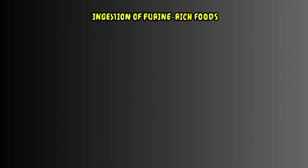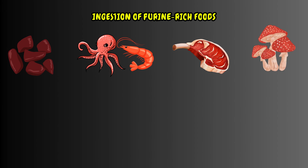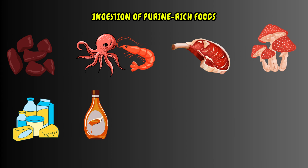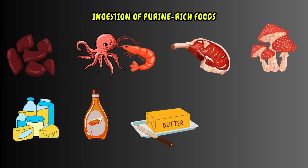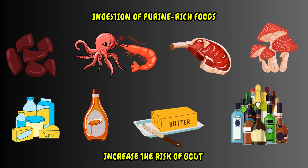Ingestion of purine-rich foods such as organ meats, seafood, beef, mushrooms, dairy products, fructose-containing drinks, high saturated fat, and alcohol increase the risk of gout.